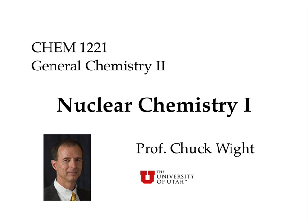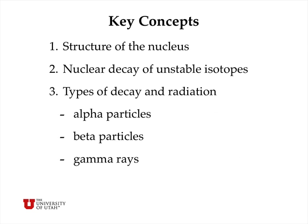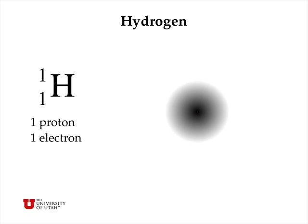Hi, welcome back to General Chemistry 2. My name is Chuck White, and today's lesson is on nuclear chemistry. Today we're going to talk about the structure of the nucleus of atoms, and we're going to talk about three main types of nuclear decay when isotopes become unstable: emission of alpha particles, beta particles, and gamma rays.